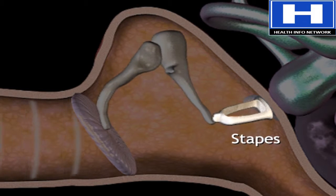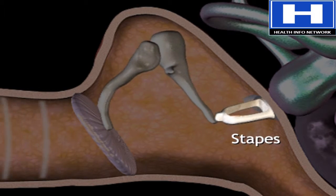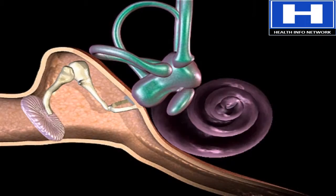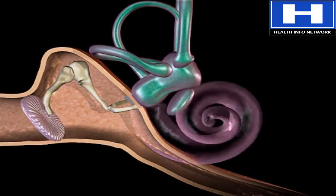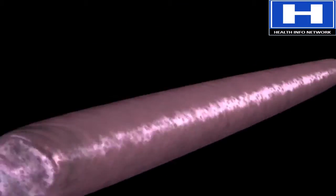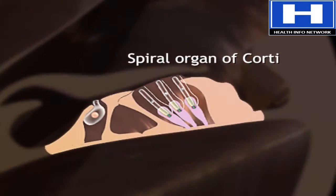The stapes pushes in and out against the structure called the oval window. This action is passed on to the cochlea, a fluid-filled snail-like structure that contains the organ of corti, the organ for hearing.